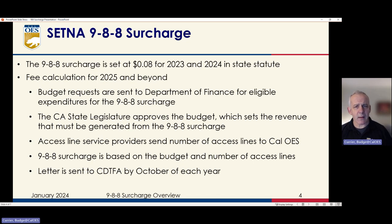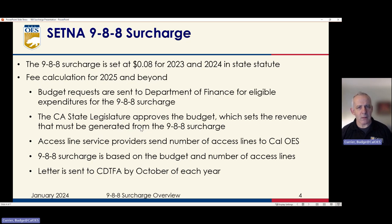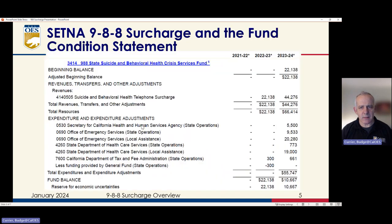We then have to send a letter to the California Department of Tax and Fee Administration by October 1st of each year. They then communicate that back to the carriers. And in January, the change in the surcharge is put into place by the carriers, and the new revenue starts coming in associated with that updated surcharge set through this process.